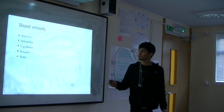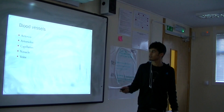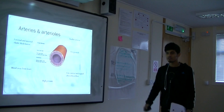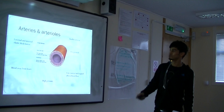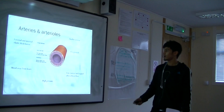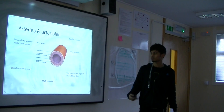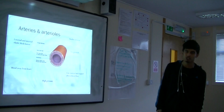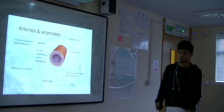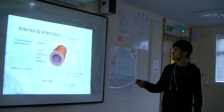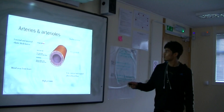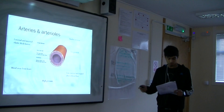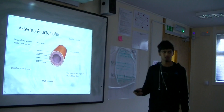Blood vessels are different kinds, which are stated here. Arteries have very thick, elasticated lumen, and they carry blood away from the heart. They have high pressure, and arteries carry oxygenated blood, except for the pulmonary artery, which is deoxygenated.